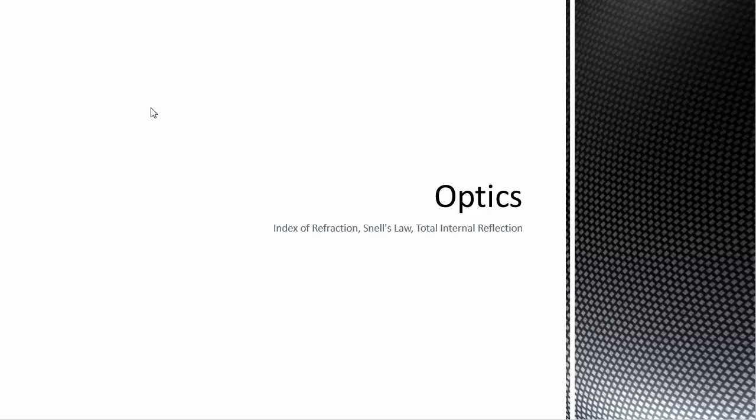So we want to move on from mirrors to lenses, but before we get into lenses in detail, we're going to look at three different optical properties: index of refraction, Snell's Law, and total internal reflection. These are going to help us understand how lenses work a little more fully.